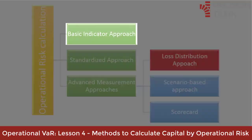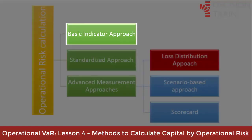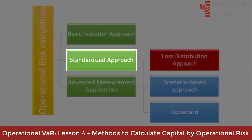The Basic Indicator Approach is based on the financial institution's annual revenue. The Standardized Approach is based on the annual income of each of the general lines of business of the financial institution.